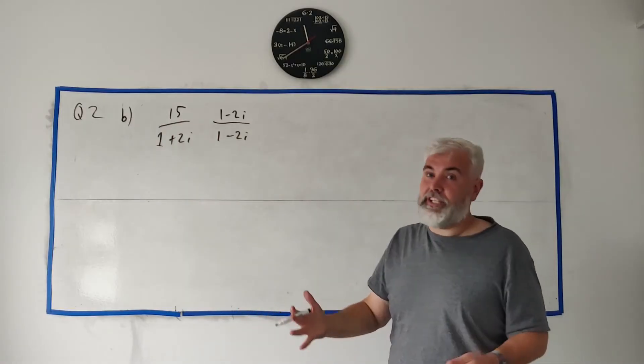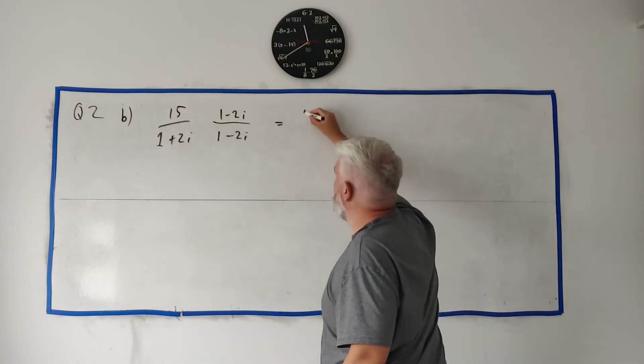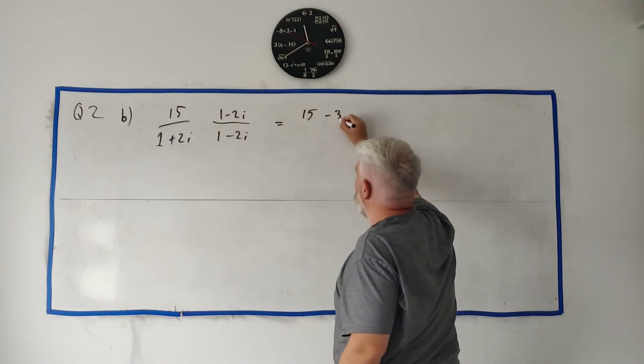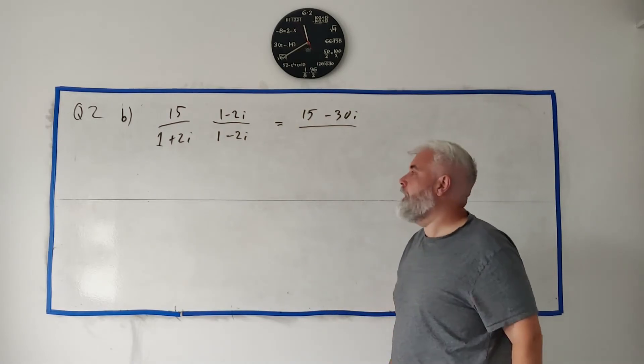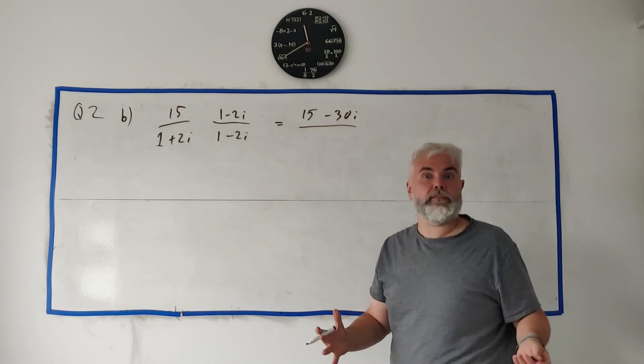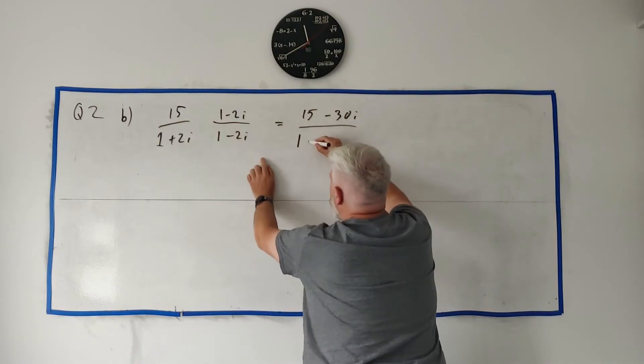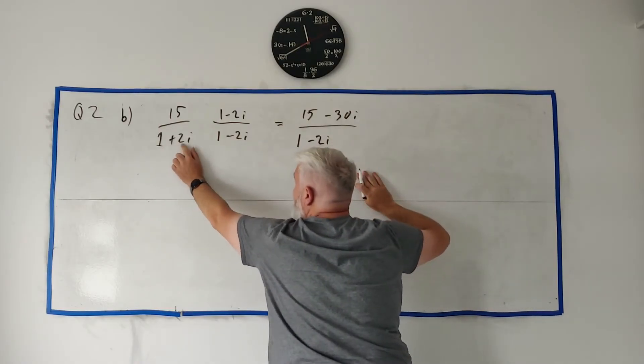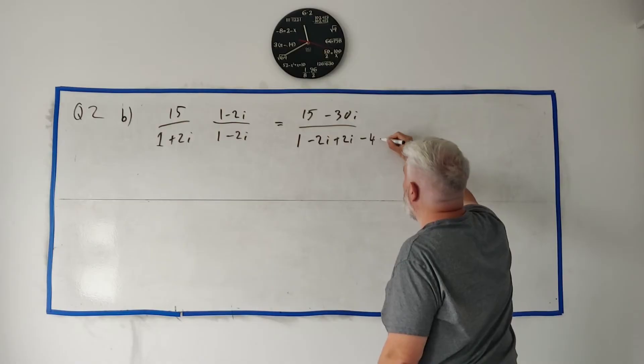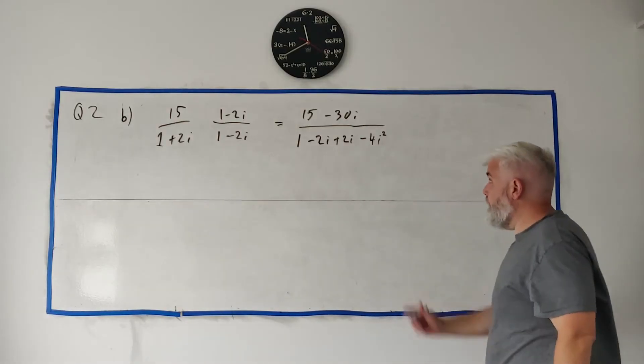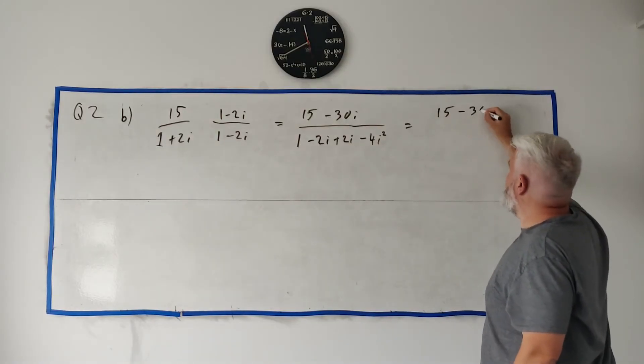But the bottom rows will become just easier to deal with. So how do we multiply fractions? Top by top. 15 times 1 is 15. 15 times minus 2i. The bottom row is minus 30i. The bottom row. Let's multiply it out. I'm telling you it's going to come out easy. It's going to come out with no i basically. But let's do it slowly. 1 times 1 is 1. 1 times minus 2 is minus 2i. 2i times 1 is plus 2i. And 2i by minus 2i is minus 4i squared.